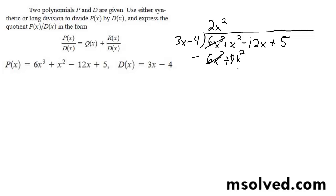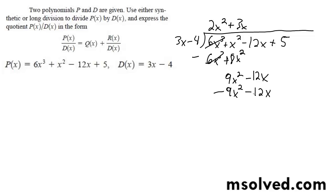Switch signs — these cancel out. I get 9x squared. It's 12x, so 3x goes in there. 3x, so 9x squared minus 12x. Switch signs, and they all cancel out.